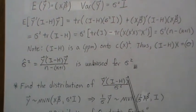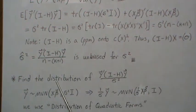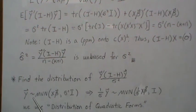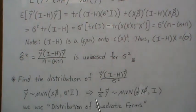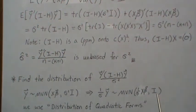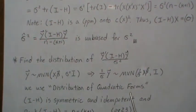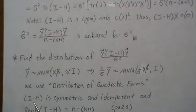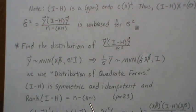Now let's find the distribution of this quadratic form divided by σ². To find distributions, we need to make assumptions: assume Y is multivariate normal with mean Xβ and variance-covariance matrix σ²I. Dividing Y by 1/σ makes it multivariate normal with mean Xβ/σ and identity covariance. We use the results from the video on distributions of quadratic forms. Note that (I − H) is symmetric, idempotent, and has rank N − (K+1).